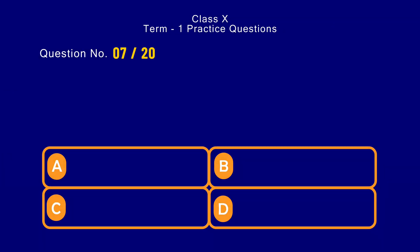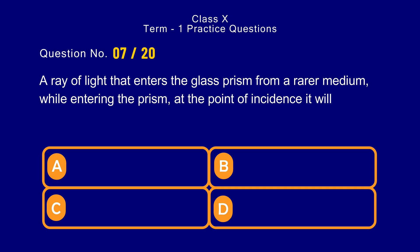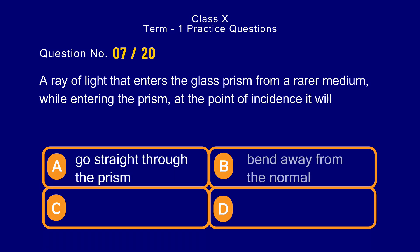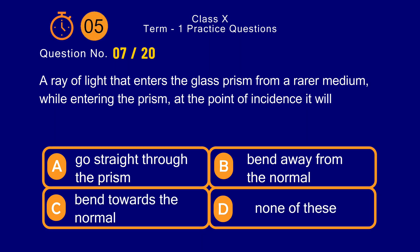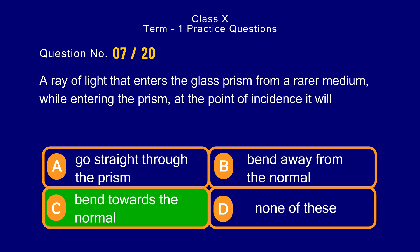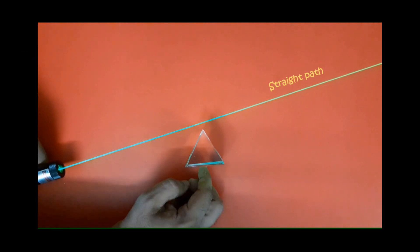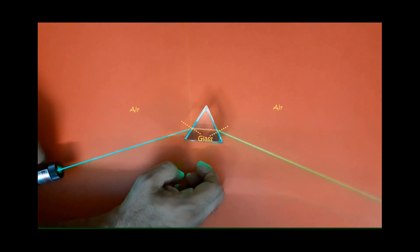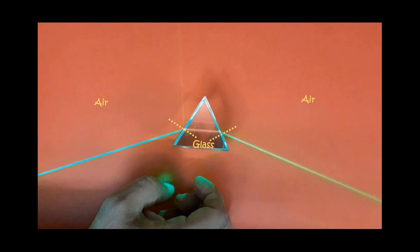Question number 7. A ray of light enters the glass prism from a rarer medium. While entering the prism at the point of incidence it will — options: a) go straight through the prism, b) bend away from the normal, c) bend towards the normal, d) none of these. The correct answer is option c) bend towards the normal. As the ray of light is going from rarer medium air to the denser medium glass, it bends towards the normal.